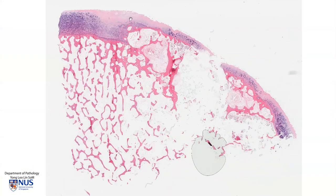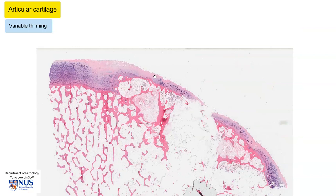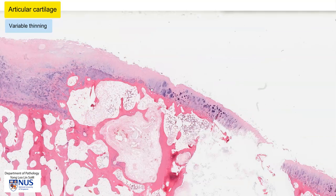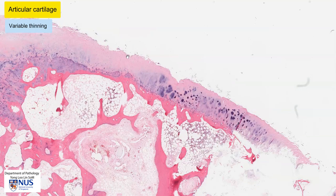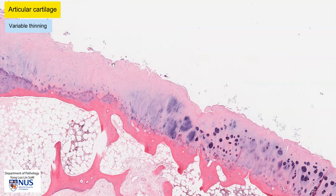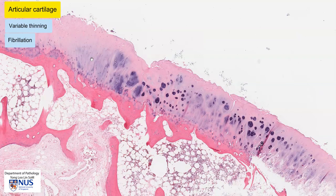Looking at the articular cartilage, we can see that the thickness is quite variable and there is some thinning in areas. This is best appreciated at this low magnification. If we zoom in a little bit, we can also see that the articular surface is quite irregular. There appear to be some cracks or fissures at the articular surface, and this is known as fibrillation of the articular surface. This is a feature of osteoarthritis.